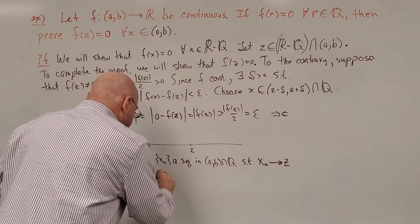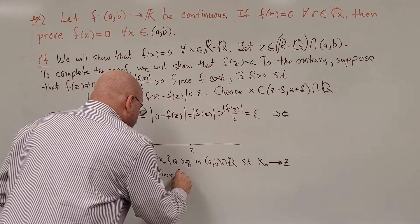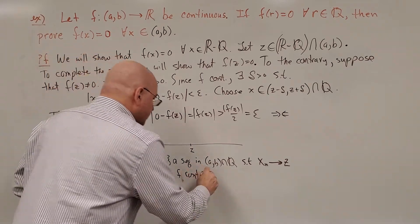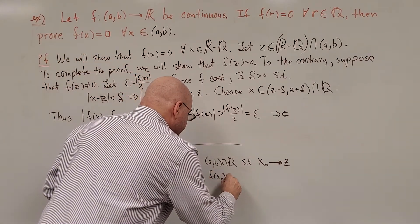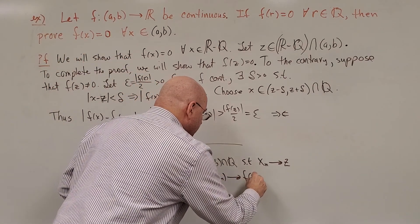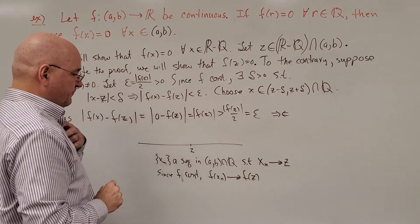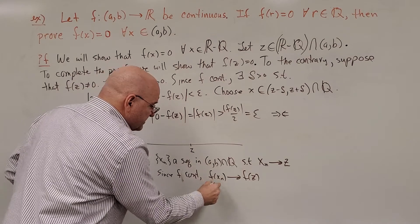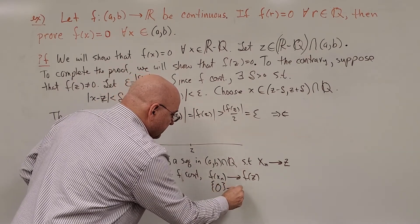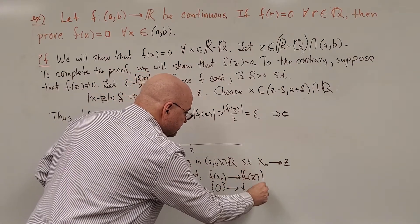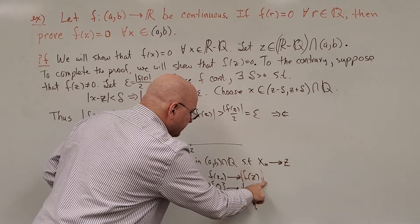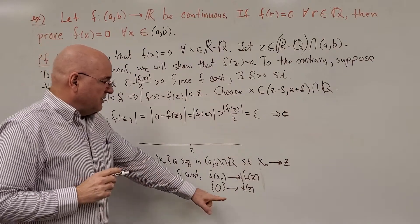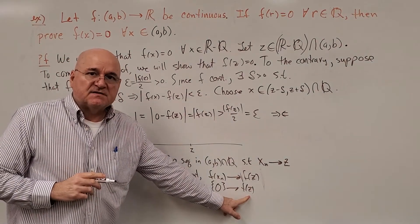Since f is continuous, f(x_n) converges to f(z). But since all the x_n are rational numbers, that's just zero, the sequence of zeros converging to... I guess that's right, the absolute values there, to f(z). That's a contradiction if f(z) is not equal to zero.